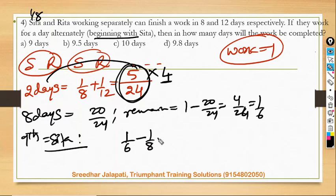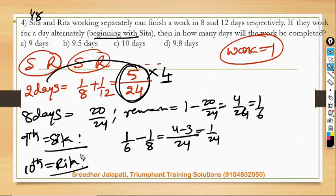So therefore, out of one sixth part, she completes one eighth, then remaining is again LCM twenty-four: four minus three, one by twenty-four.